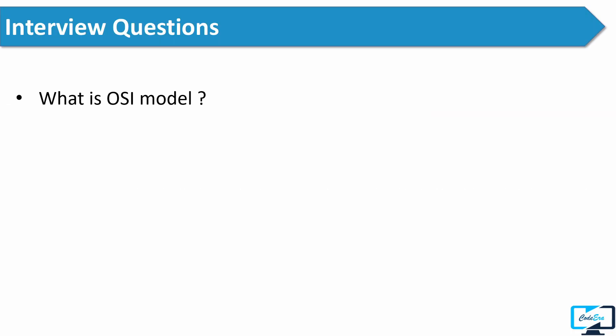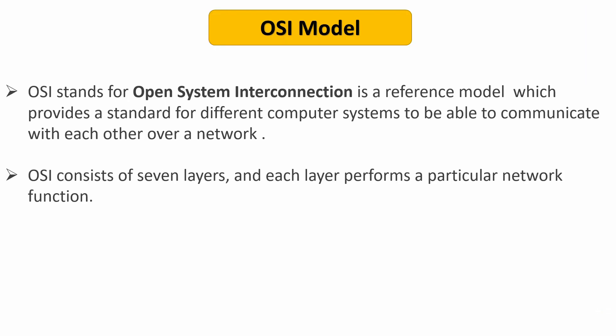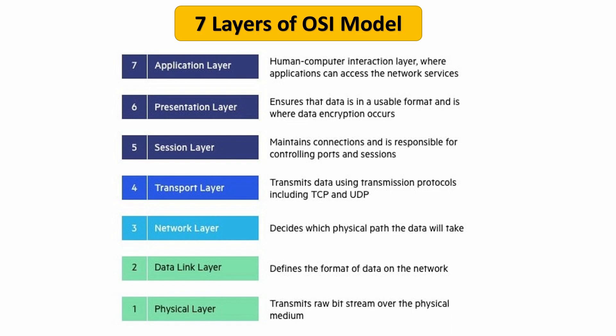After this, the interviewer asked him what is the OSI model. OSI stands for Open System Interconnection, which is a reference model that provides a standard for different computer systems to communicate with each other over a network. An OSI model consists of seven layers and each layer performs a particular network function. These are the seven layers of the OSI model which you should mention in your answer.